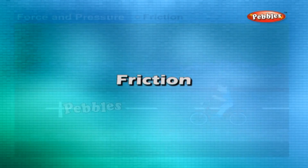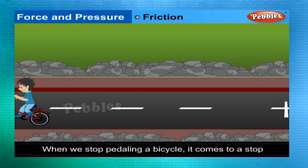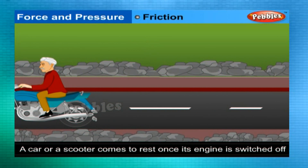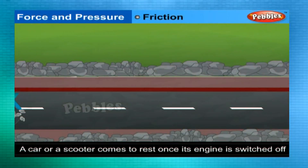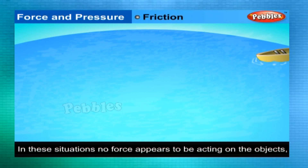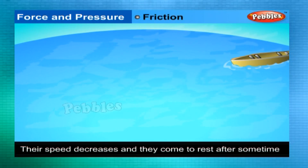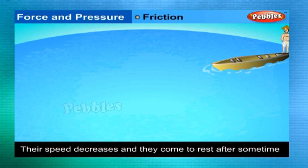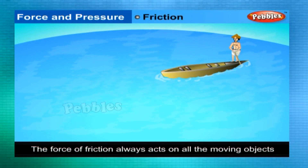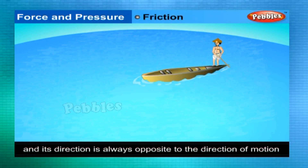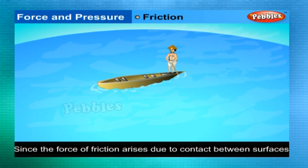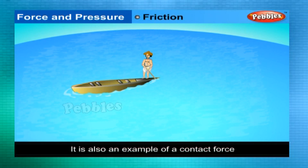Friction: When we stop pedaling a bicycle, it gradually slows down and finally comes to a stop. A car or a scooter also comes to rest once its engine is switched off. Similarly, a boat comes to rest if we stop rowing it. In all these situations, no force appears to be acting on the objects, yet their speed gradually decreases. The force of friction always acts on all moving objects and its direction is always opposite to the direction of motion. Since the force of friction arises due to contact between surfaces, it is also an example of a contact force.